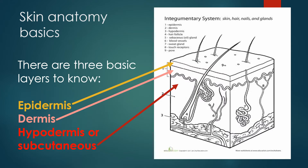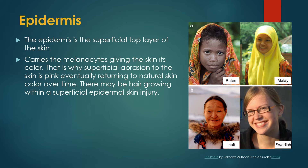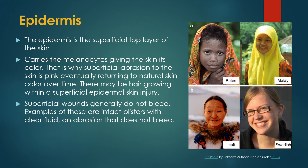Here's some skin anatomy basics. There are basically three layers to the skin: the epidermis, which is what you see; the dermis; and then the hypodermis, most often called the subcutaneous layer, that contains the hair follicles, blood vessels, and sweat glands. The epidermis is the superficial top layer of the skin and carries the coloring of the skin. That's why if you get an abrasion that is pink, it will eventually, as it heals, turn to natural skin color over time. There may be hair growing with a superficial epidermal skin injury.